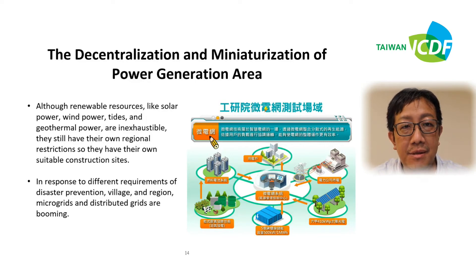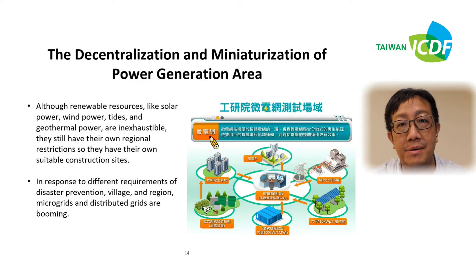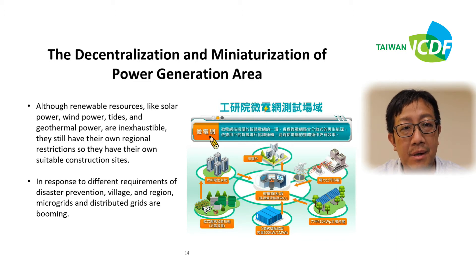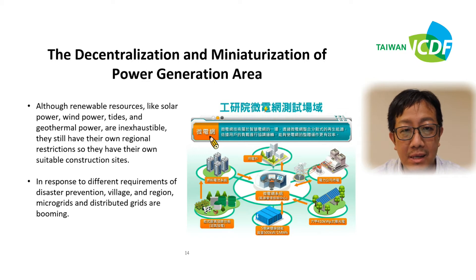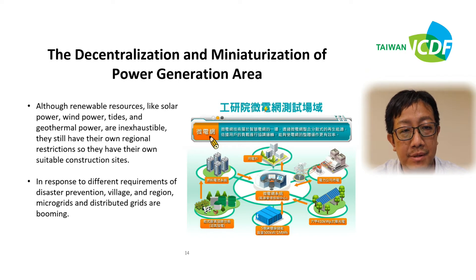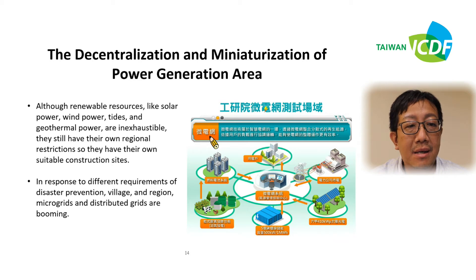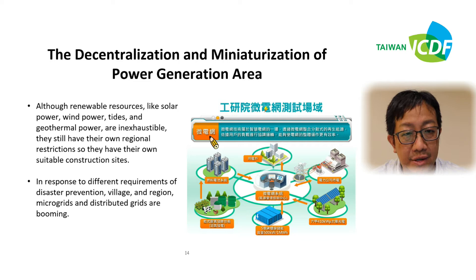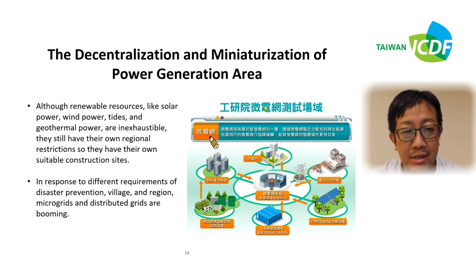About the decentralization and the miniaturization of the power grid area. Although the renewable resources like solar power, wind power, tides, and geothermal power are inexhaustible, they still have their own regional restrictions, so they have their own suitable construction sites. In response to the different requirements of disaster prevention, village and region, microgrids and distributed grids are booming here.